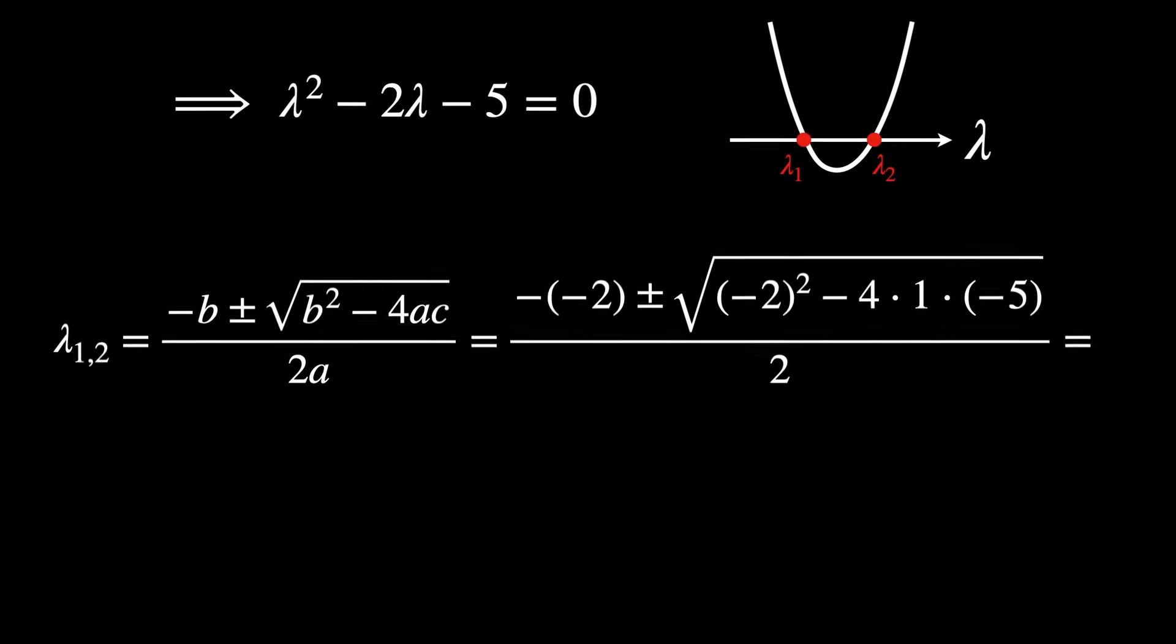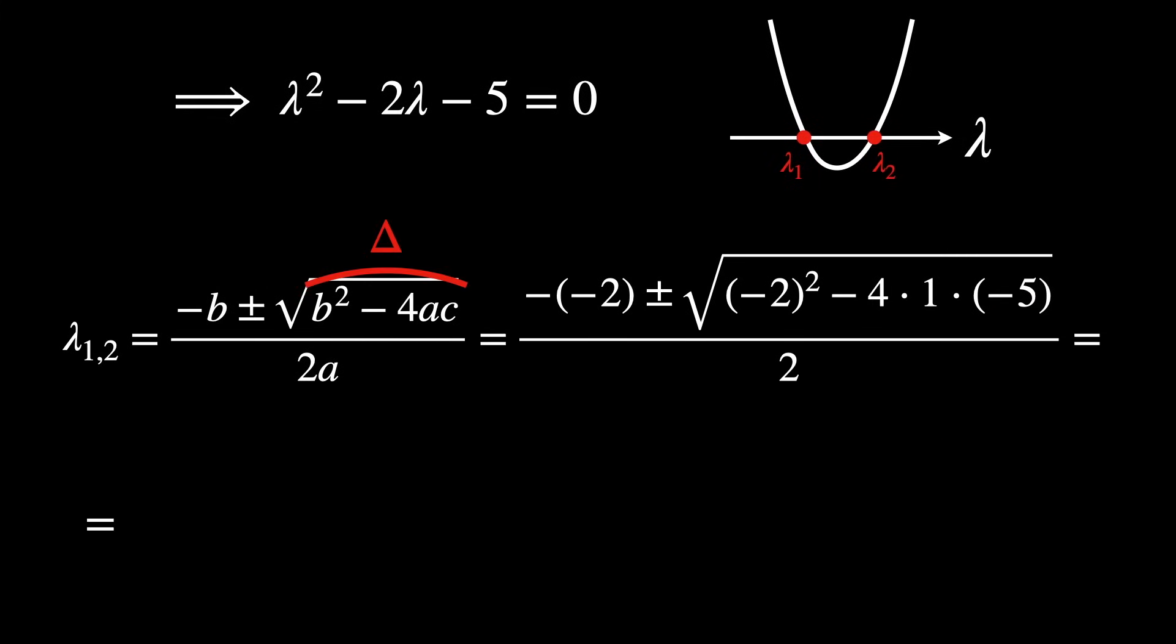Using the formula for solving a quadratic equation, we find two values, lambda one and lambda two, and these are our eigenvalues.